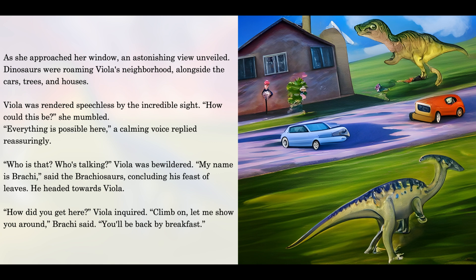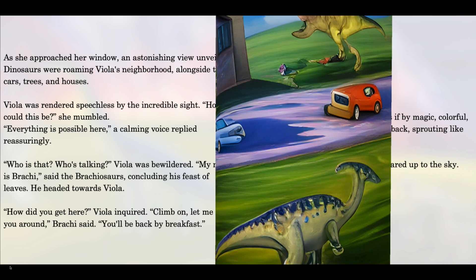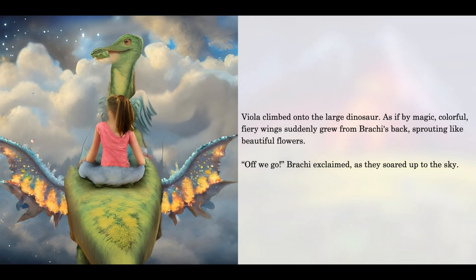"How could this be?" she mumbled. "Everything is possible here," a calming voice replied reassuringly. "Who is that? Who's talking?" Viola was bewildered. "My name is Brachy," said the brachiosaurus. Concluding his feast of leaves, he headed towards Viola. "How did you get here?" Viola inquired. "Climb on. Let me show you around," Brachy said. "You'll be back by breakfast." Viola climbed onto the large dinosaur.